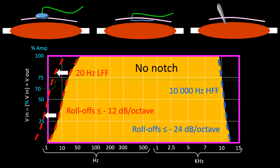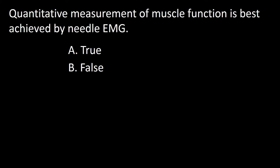The filters used to capture compound action potentials and complex multi-spike waveforms are the same. The low-frequency filter should be set at 20 Hz, but if the baseline is too wavy it can be brought down to 2 Hz. The high-frequency filter should be at 10,000 Hz, though as low as 3,000 Hz has been recommended by some. So the answer to this question is false.